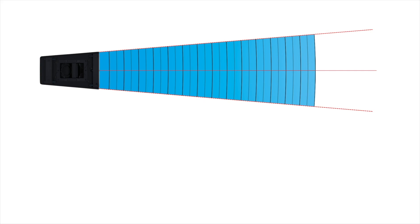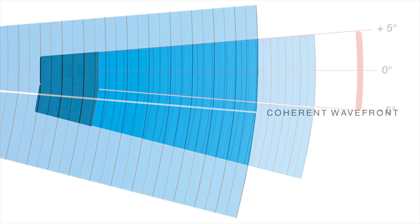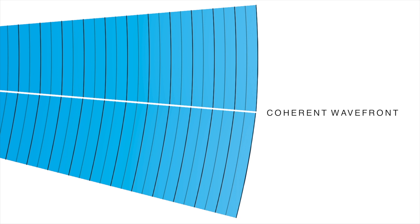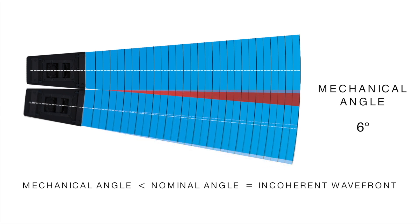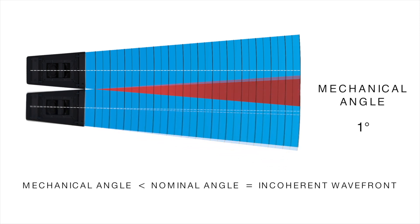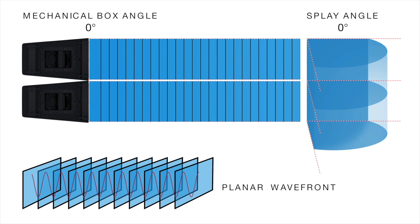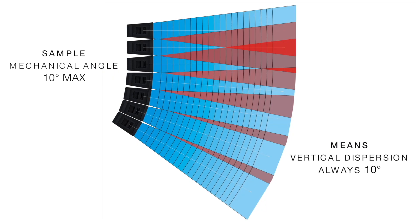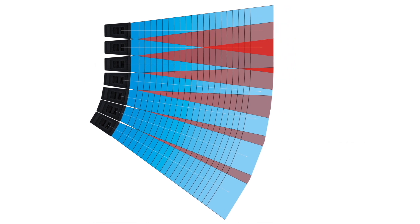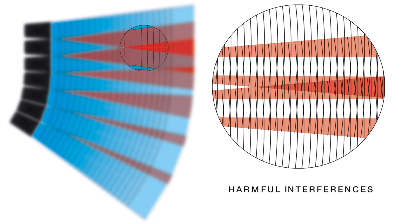With typical line array elements, a vertical dispersion angle greater than zero degrees — the nominal angle — is selected so that the resulting wavefront between the elements does not show any dips when the array is curved. This vertical dispersion angle causes the wavefronts of the different elements to overlap at all angles except the nominal angle. Only with a vertical dispersion angle of zero degrees is the wavefront completely cylindrical. Nonetheless, since typical line arrays have a vertical dispersion angle greater than zero degrees, the wavefront is always curved. At high frequencies, this leads to interference.